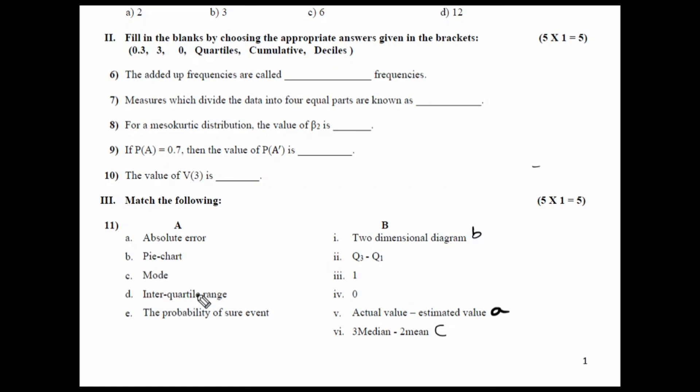Interquartile range. What do you mean by range? Range is the difference between highest value and the lowest value. So, here we have three quartiles: Q3, Q2 and Q1. Q3 is the upper quartile and Q1 is the lower quartile. So, Q3 minus Q1 would be the correct answer. Next. The probability of a sure event. For a sure event, the probability is always 1. If it was a null event here, it could have been 0. So, this is your match the following.